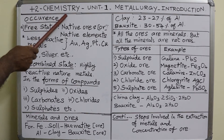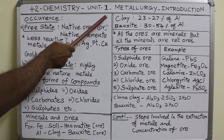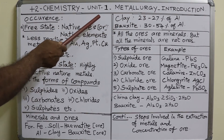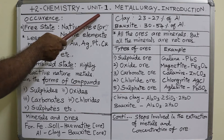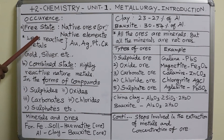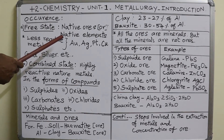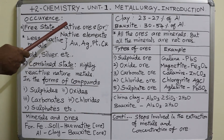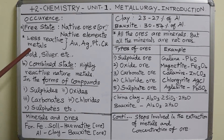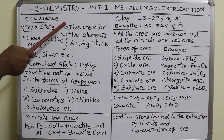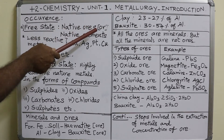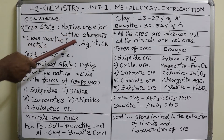Hi children. Plus 2 Chemistry, Unit 1 - Metallurgy. Introduction: metallurgy is the chapter in which we are dealing with the extraction of metals. Various steps are involved, and the chapter also deals with the properties of metals and uses of metals.